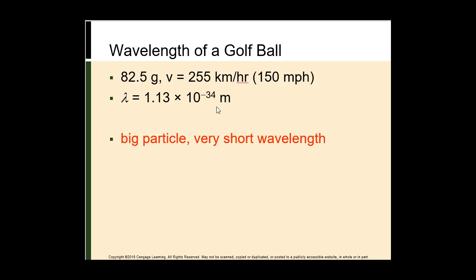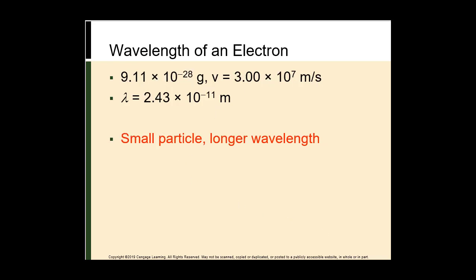Wave properties are never assigned to massive objects. It is possible to observe wave-like properties only for particles of extremely small mass, like protons, neutrons, and electrons. For example, here is the wavelength of an electron: using the electron's mass and velocity in Planck's constant divided by the product gives a wavelength of 2.43 times 10 to the negative 11th. Small particle, longer wavelength.